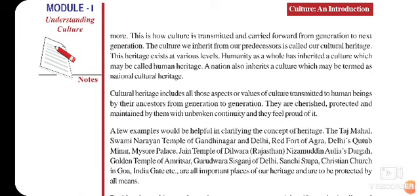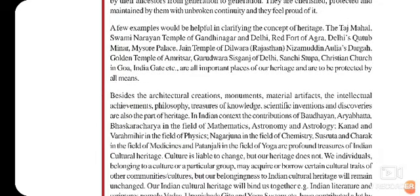The culture we inherit from our predecessors is called cultural heritage. This heritage exists at various levels. Humanity as a whole has inherited a culture which may be called human heritage. A nation also inherits a culture which may be termed as national cultural heritage. Cultural heritage includes all those aspects and values of culture transmitted to human beings by their ancestors from generation to generation. They are cherished, protected, and maintained with unbroken continuity and they feel proud of it. A few examples: the Taj Mahal, Swaminarayan Temple of Gandhinagar and Delhi, Red Fort of Agra, Delhi's Qutub Minar, Mysore Palace, Jain Temples of Dilwara Rajasthan, Nizamuddin Aulia's Dargah, Golden Temple of Amritsar, Gurdwara Sis Ganj of Delhi, Sanchi Stupa, Christian Church in Goa, India Gate — they are all important places of our cultural heritage and are protected by all means.